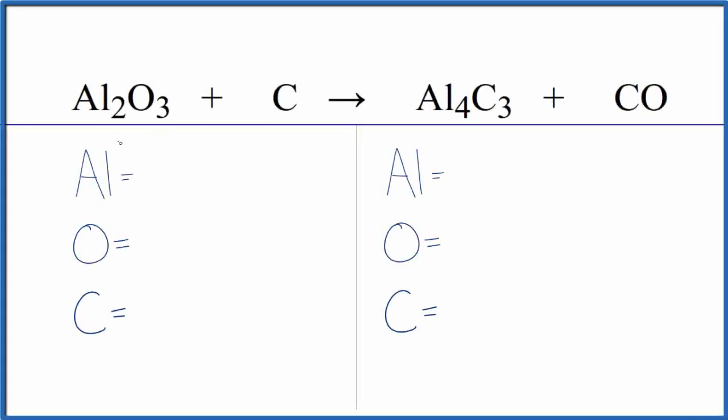In this video we'll balance the equation for aluminum oxide plus carbon that's giving us aluminum carbide and carbon monoxide. This is one way that you can make aluminum carbide, although it does produce carbon monoxide which isn't really a desirable thing.